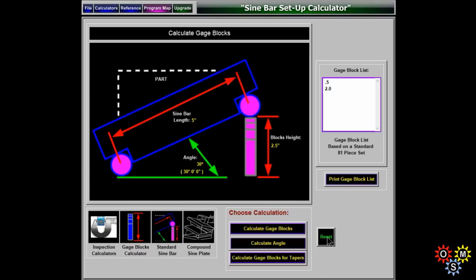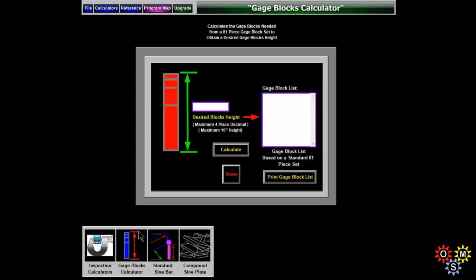And on the right, there's a gauge block list. But if you wanted the gauge block list separately, you can go down bottom left and select that. And put in your total height, and then it'll give you a selection of blocks to use.